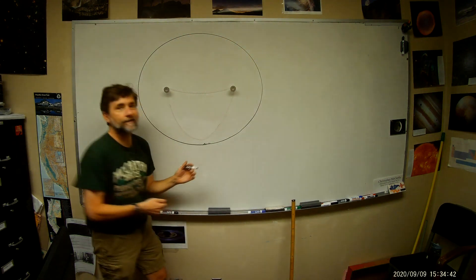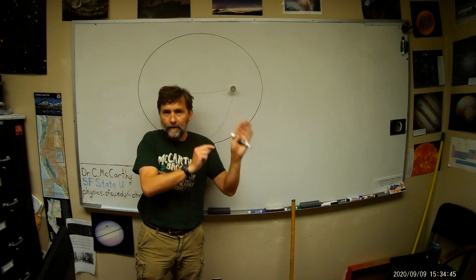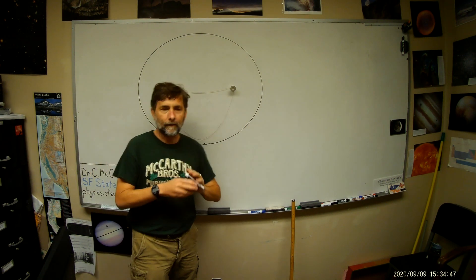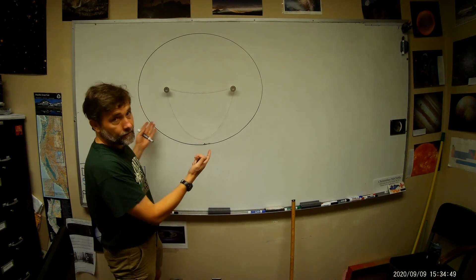All right, so that's an ellipse. You might call it an oval, but it's a very precisely defined mathematical shape. And it's not a circle.